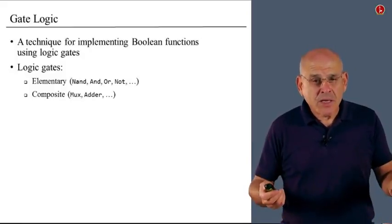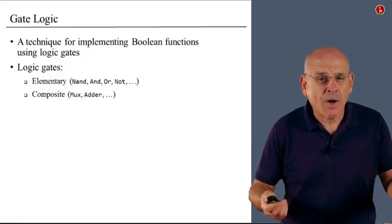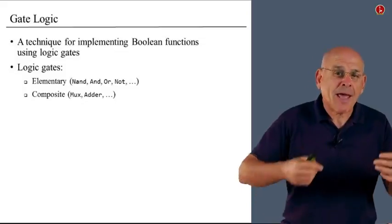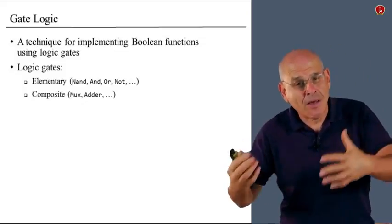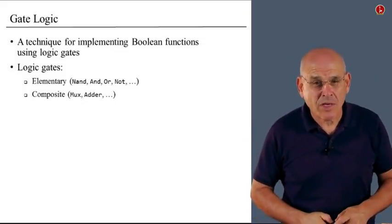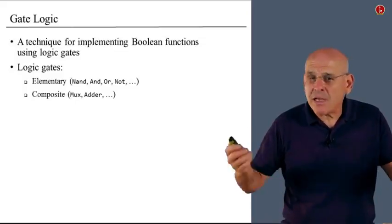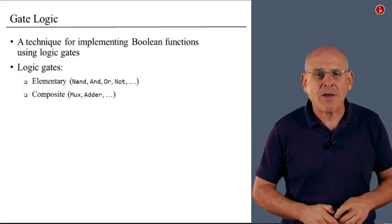What is a composite logic gate? A composite logic gate is one which is made up from elementary logic gates and other composite logic gates. Or simply, it's a more complex gate than the elementary ones.